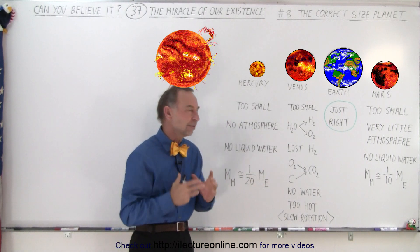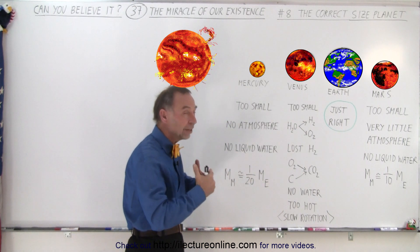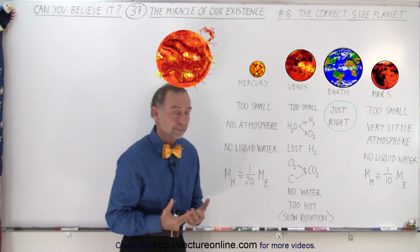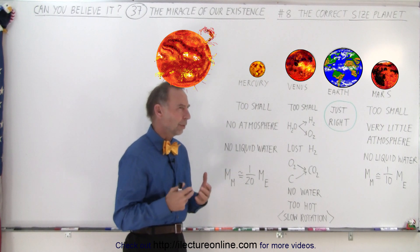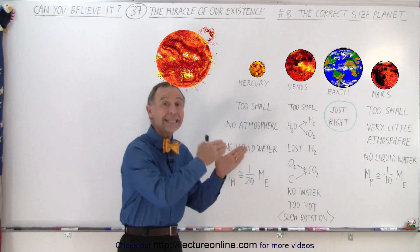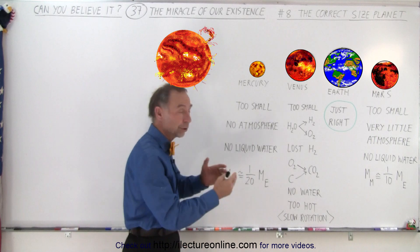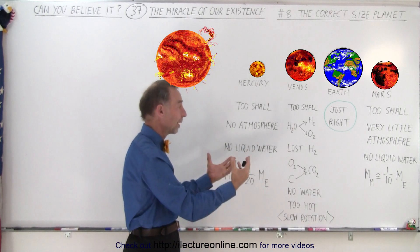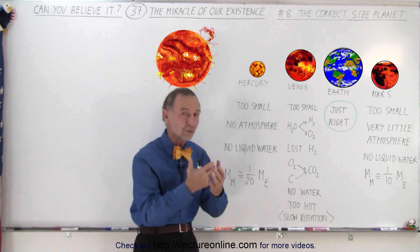What about Venus? Venus is almost the same size as Earth, and so Venus was able to hang on to part of its atmosphere. You may say, well, wait a minute, part of it? The atmospheric pressure on Venus is 90 times the atmospheric pressure on Earth. There's an enormous atmosphere around Venus, and because there's so much atmosphere around Venus, it is also extremely hot.